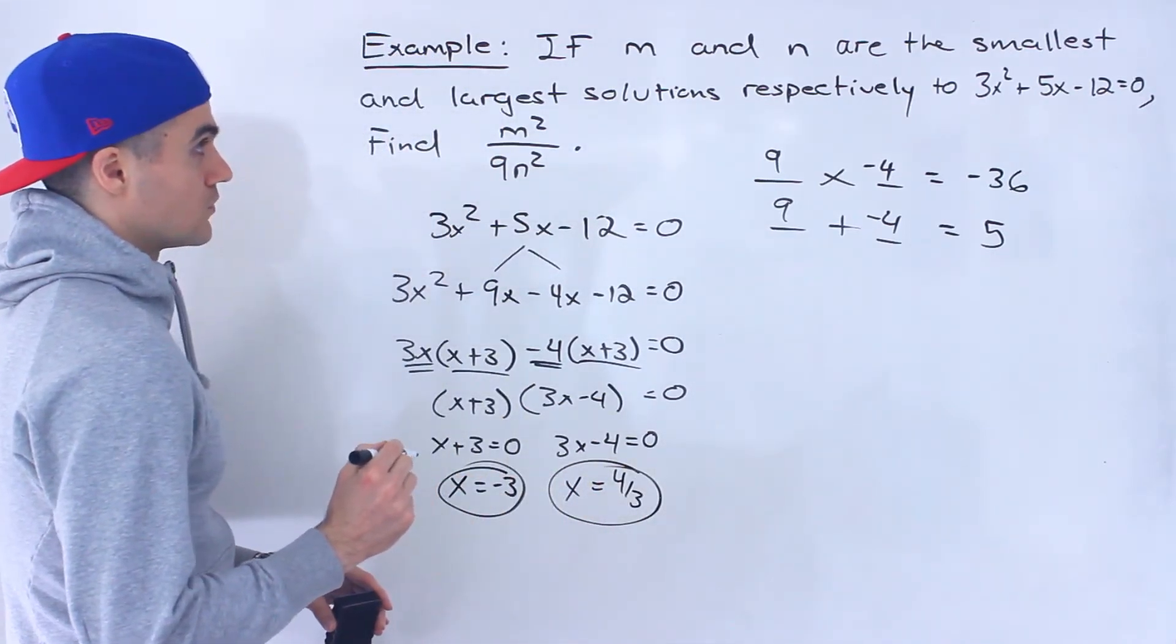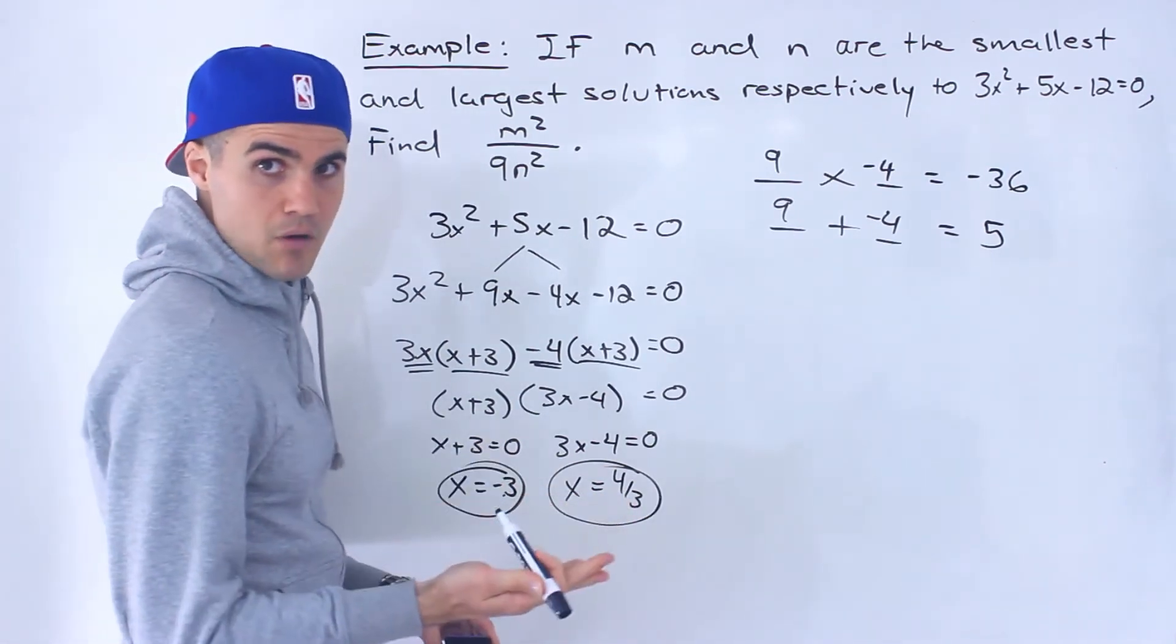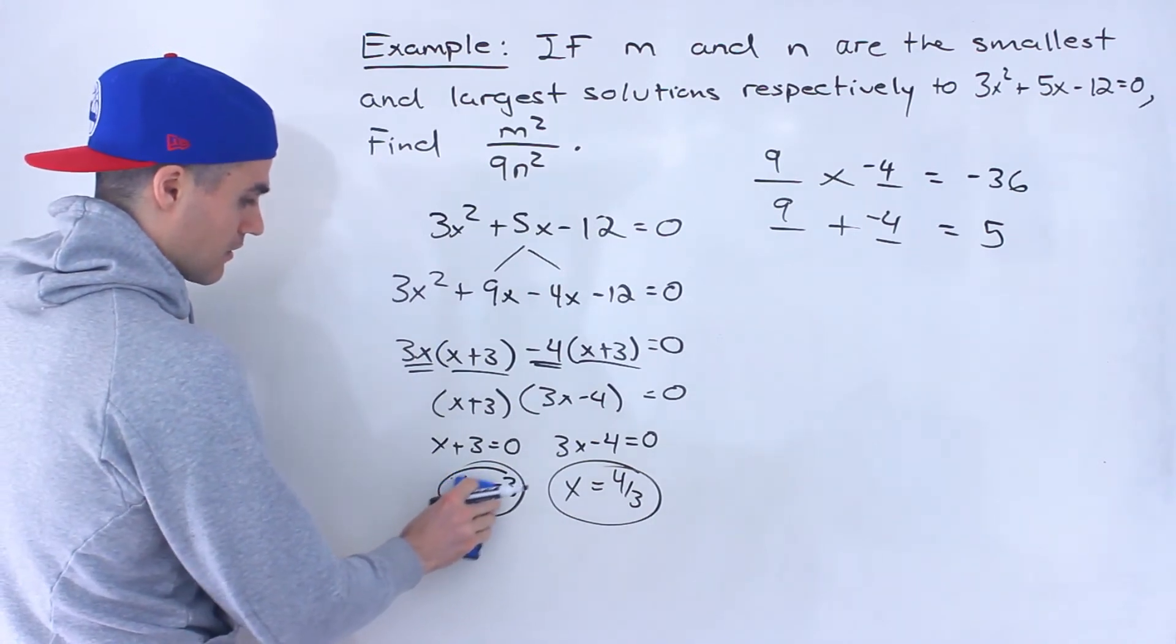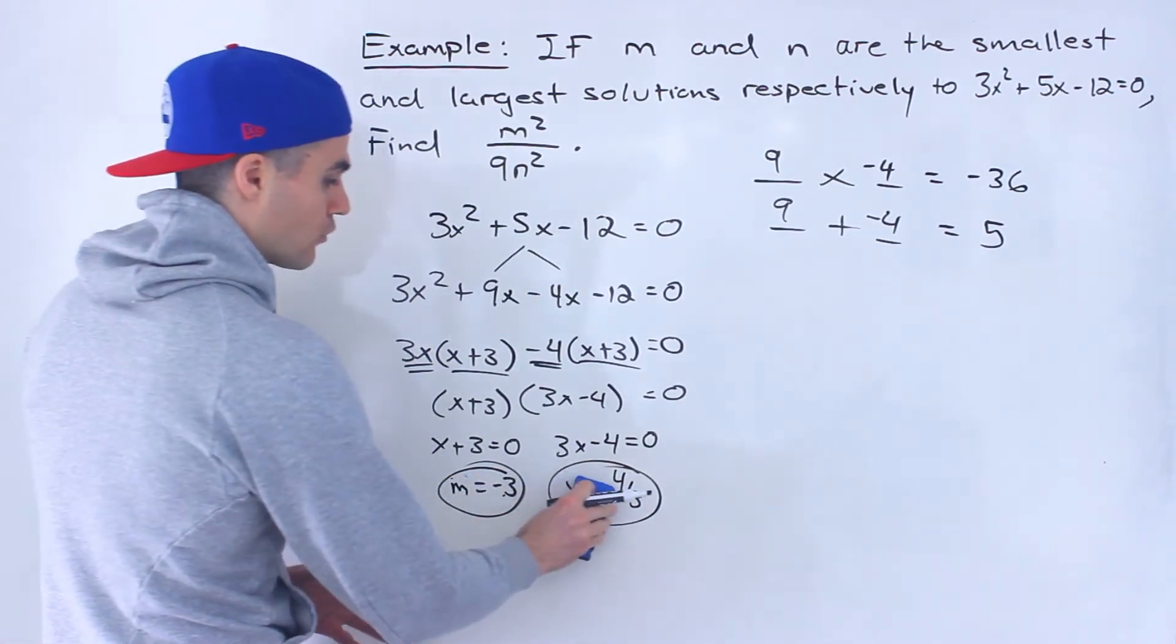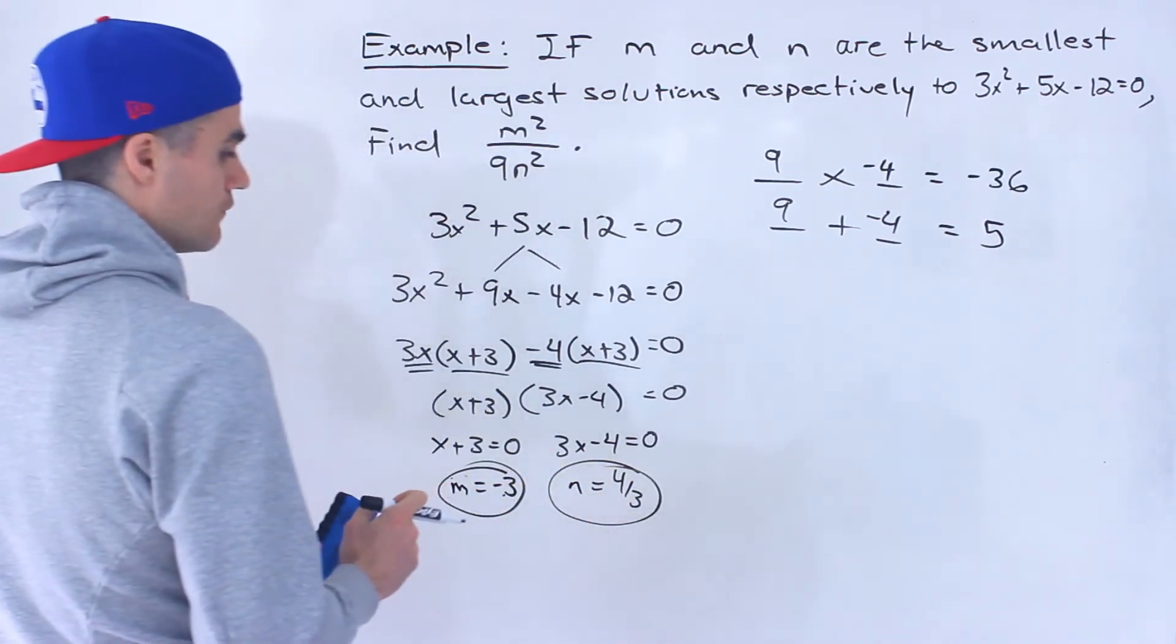So out of these two, which one's the smallest solution? Well notice negative 3 is smaller than positive 4 over 3. So this here would be the m value, and then 4 over 3 would be the n value.